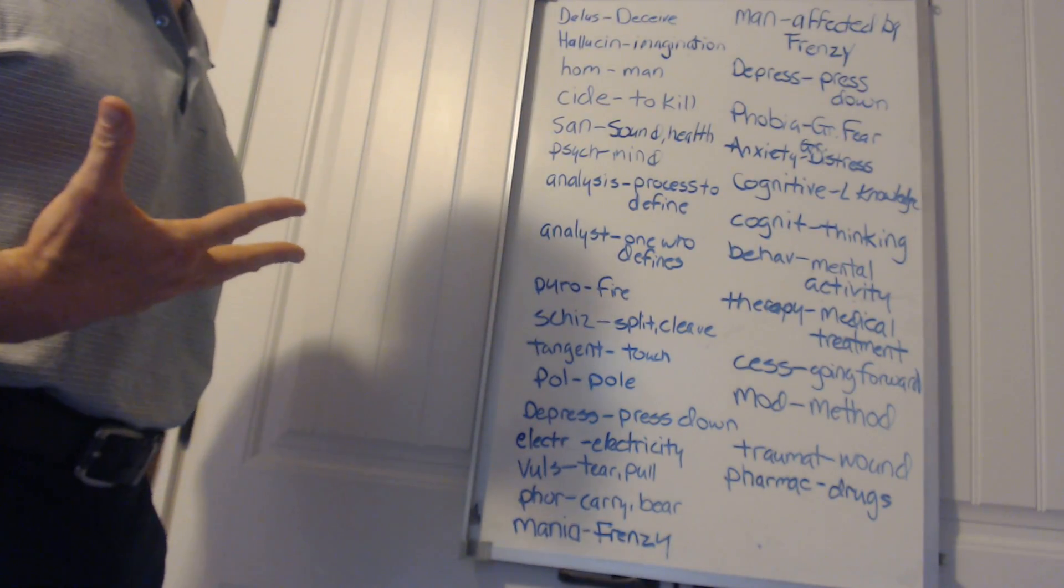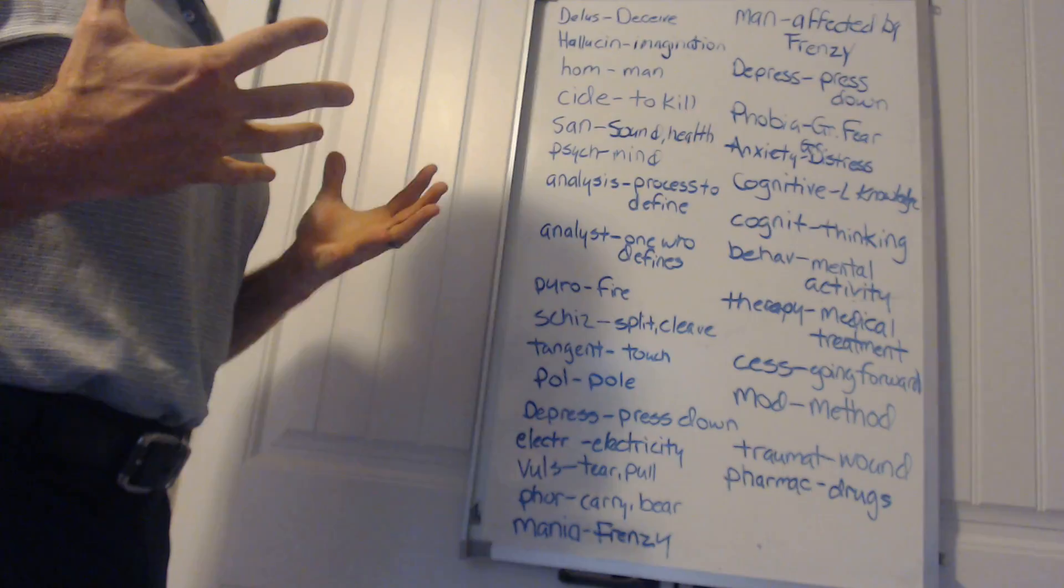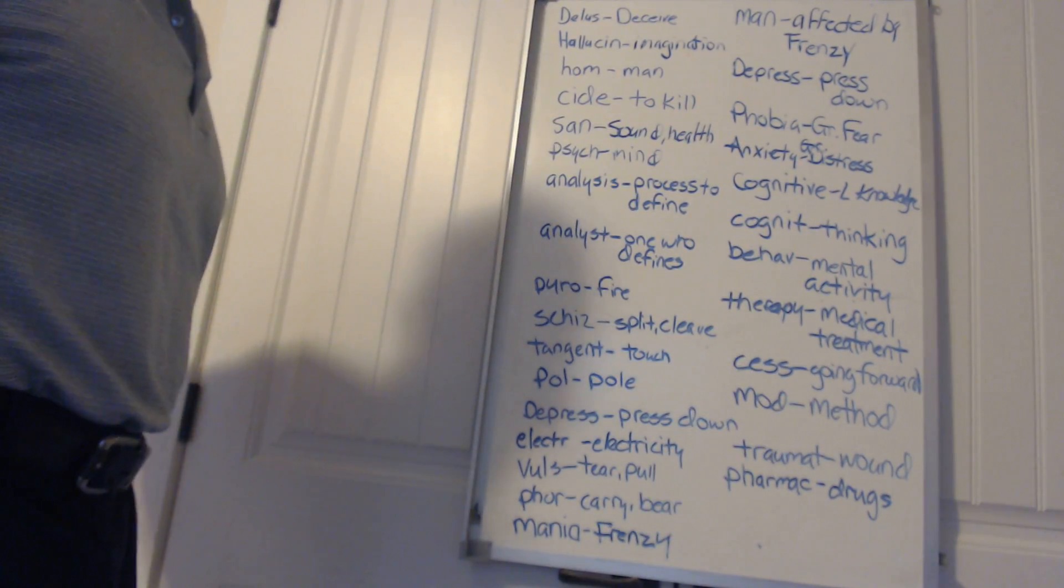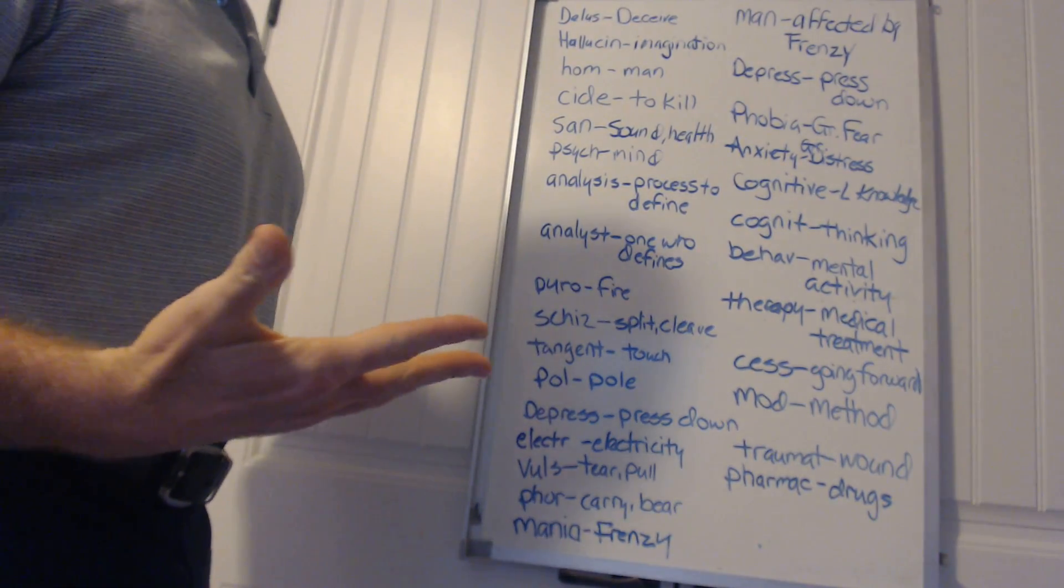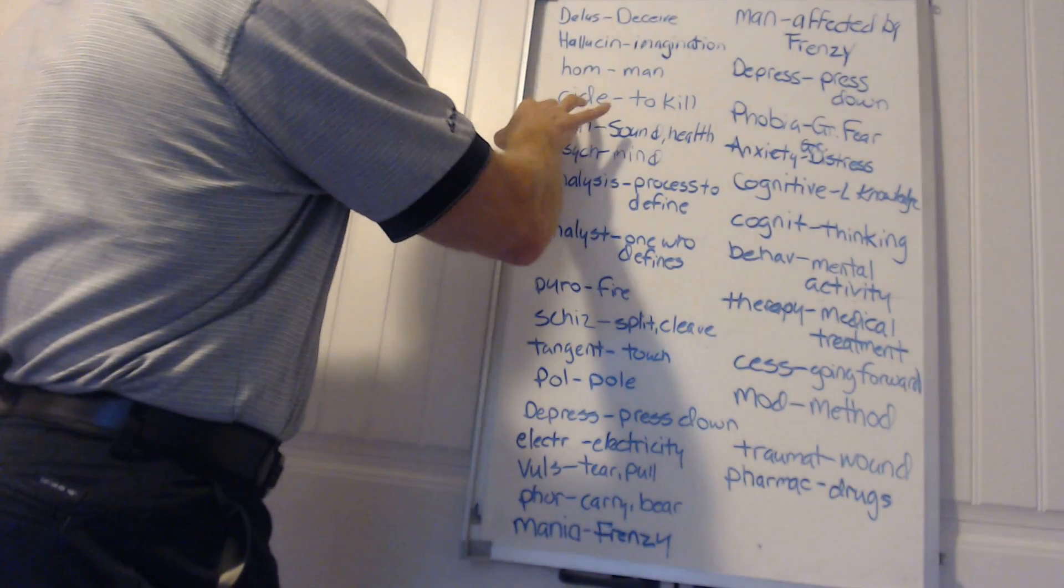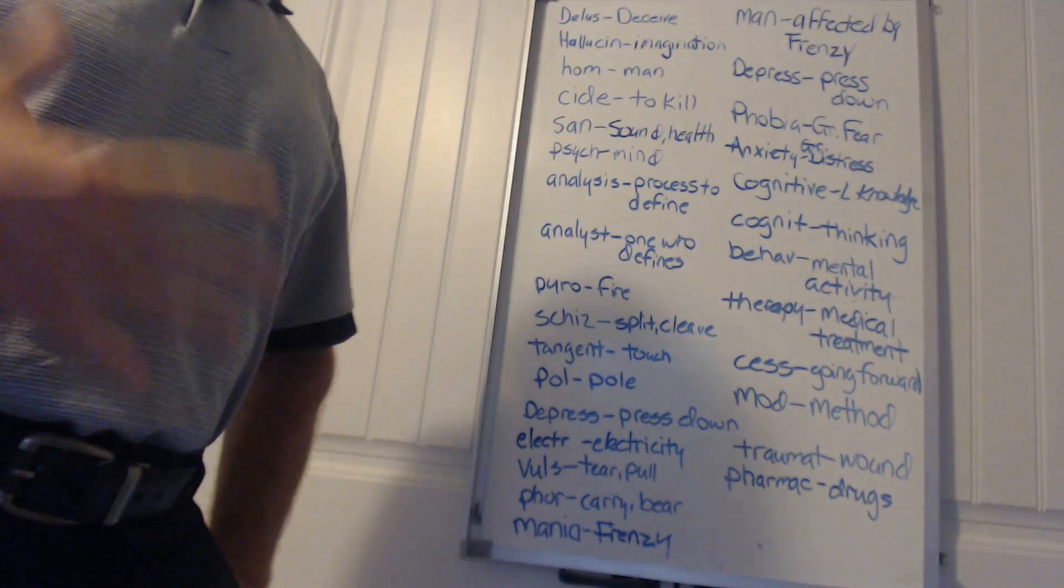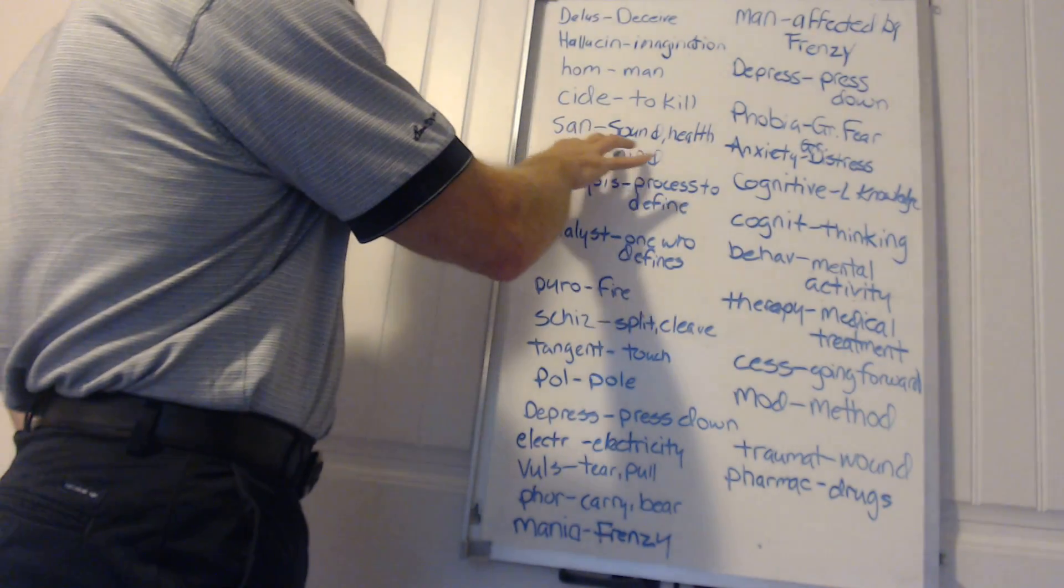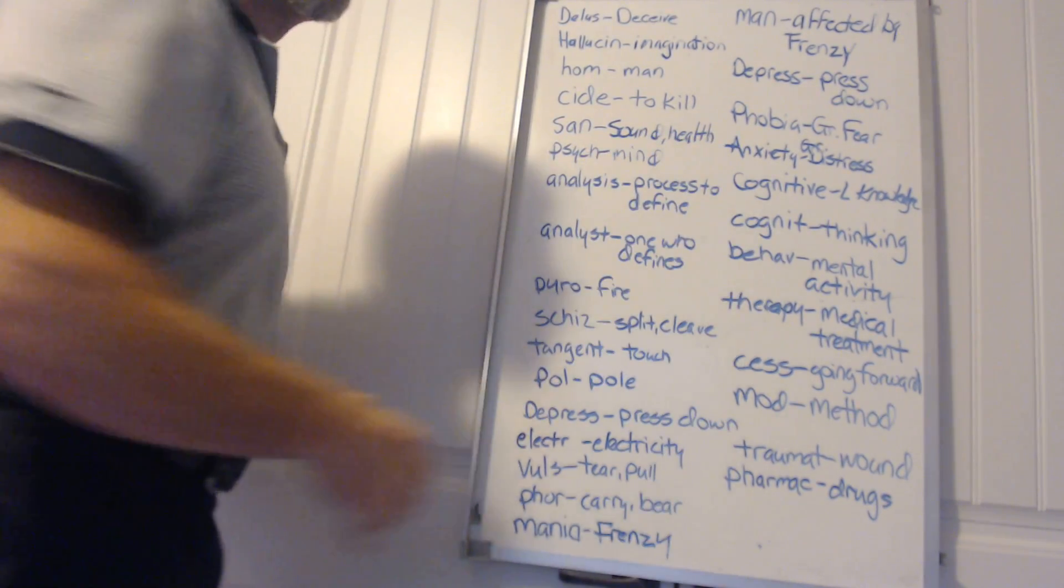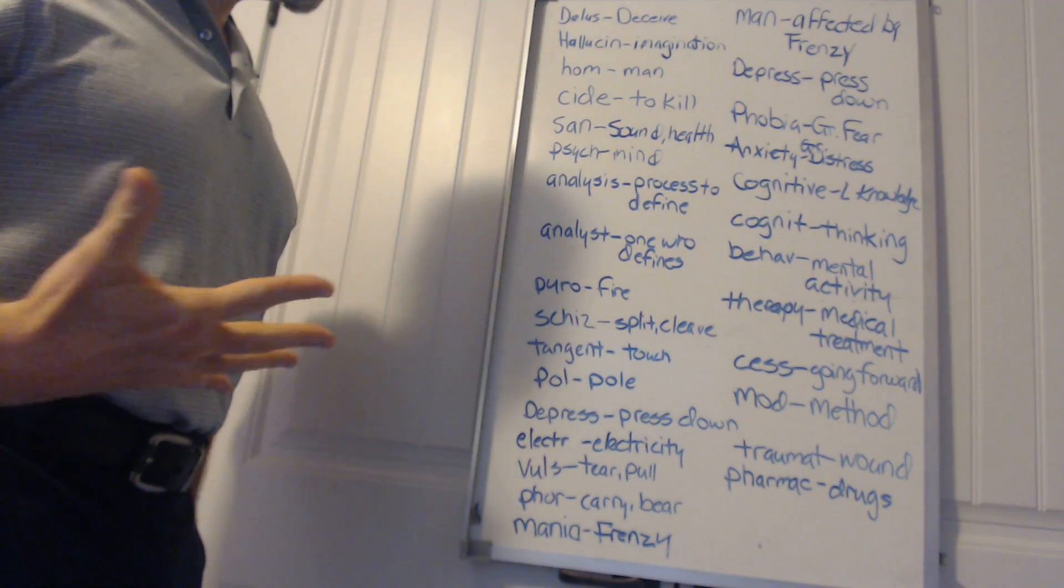Hom means man. Homicide might be to kill a man. Cide means to kill, so homicide would be to kill a man. San means sound or health. Insanity, for example, would be an absence of a sound mind or good mental health.